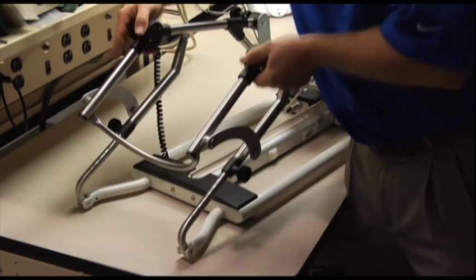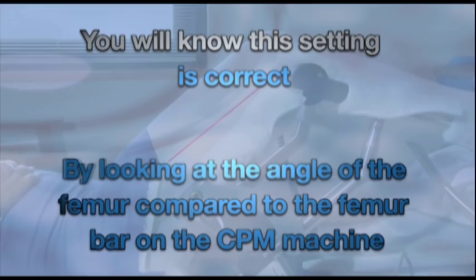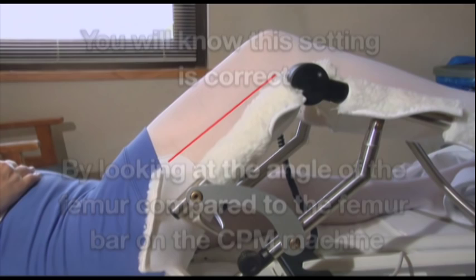A CPM machine set in the middle range will fit the majority of your patients. You will be able to verify that this setting is correct by looking at the angle of the patient's femur compared to the angle of the femur bar on the CPM machine. The leg should be parallel with this bar as it moves into greater flexion angles.